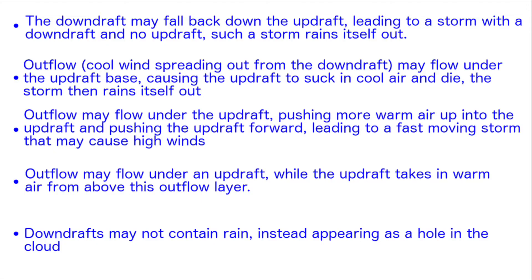Depending on temperature and wind patterns at various levels of the atmosphere, storms can do a lot of different things. The downdraft may fall back down through the updraft rather than to the side of it. This cools off the updraft and leads to a storm that is all downdraft. With no updraft to feed moisture into the storm, the storm will rain itself out.